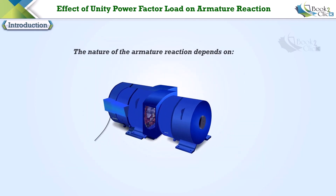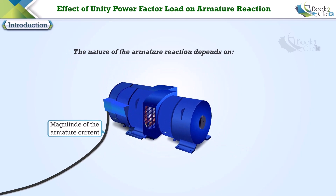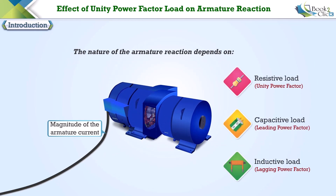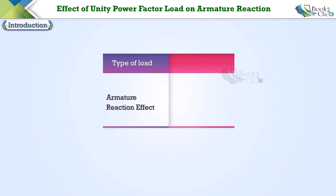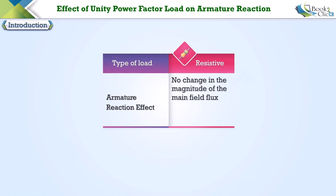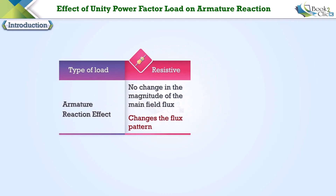The nature of the armature reaction depends on the magnitude of the armature current and the type of load connected to the alternator. If the load connected to the alternator is resistive, the armature reaction will not change the magnitude of the main field flux, but it will change the flux pattern.